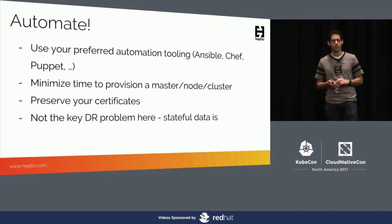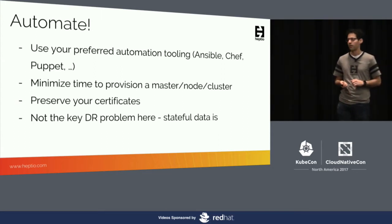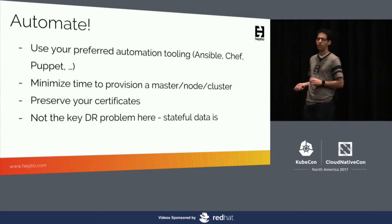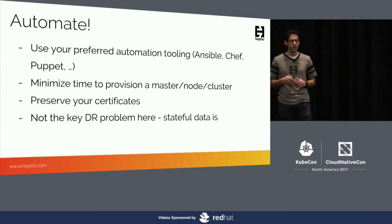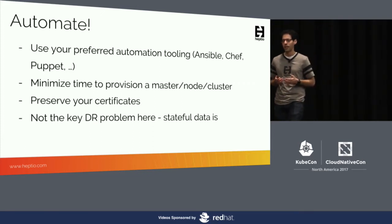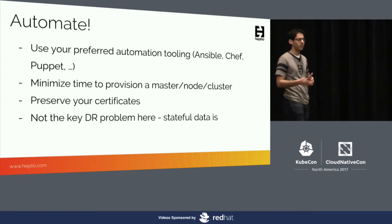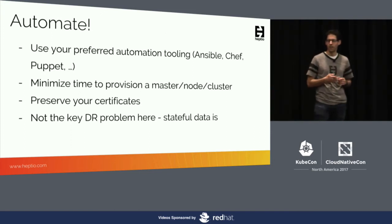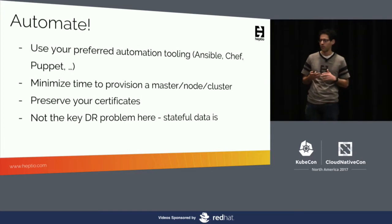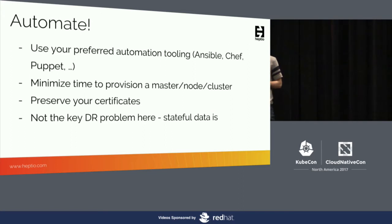One thing to keep in mind is that there is a small amount of state that is necessary to preserve — the certificates used for the components in the cluster to talk to each other. When kubelets talk to the master or API servers, and when the controller manager talks to the API servers, there are SSL certificates used. You want to maintain and retain these and incorporate them into your automation so that when you provision new instances, you bring your certificates with you. If you lose them, you have to regenerate them and potentially could have an outage.